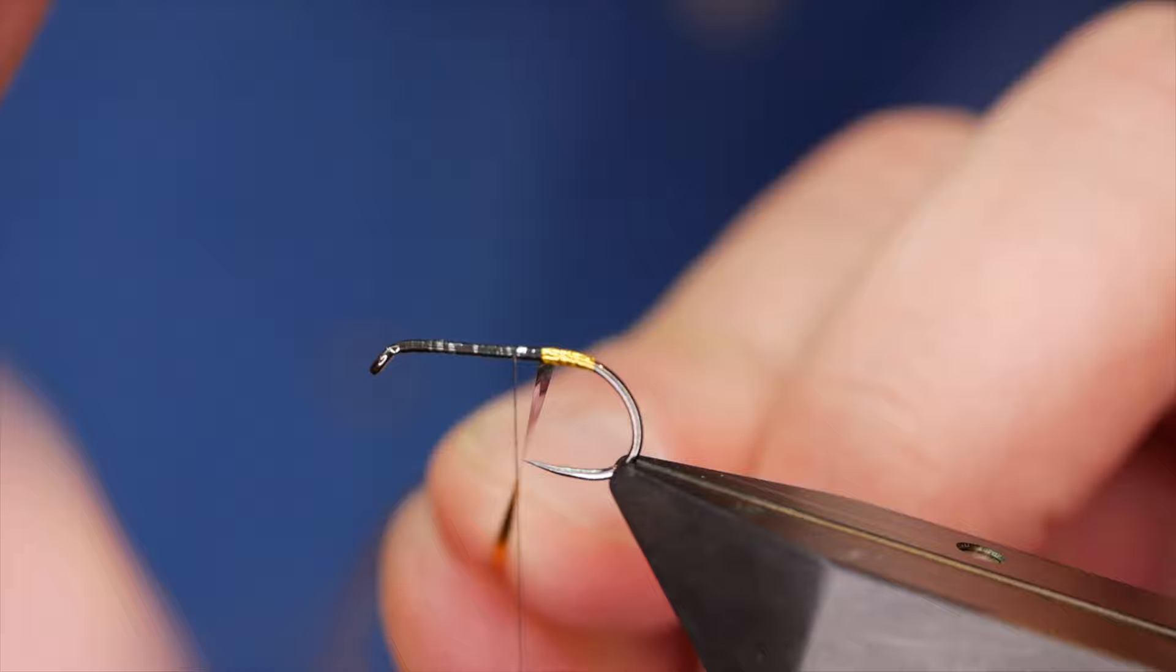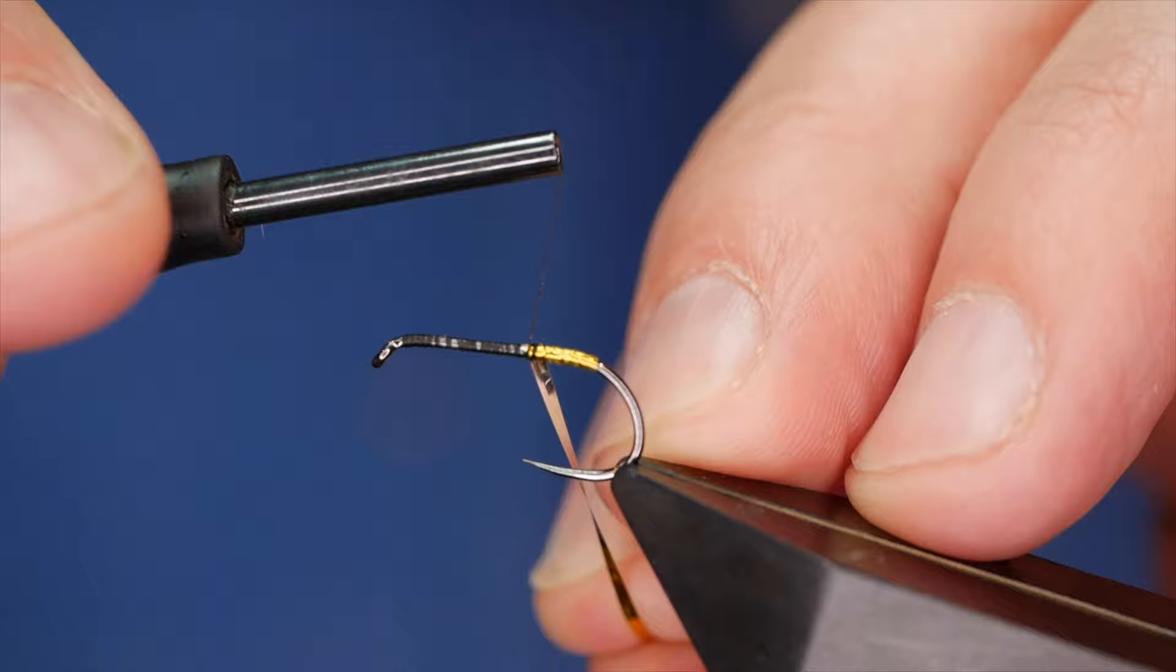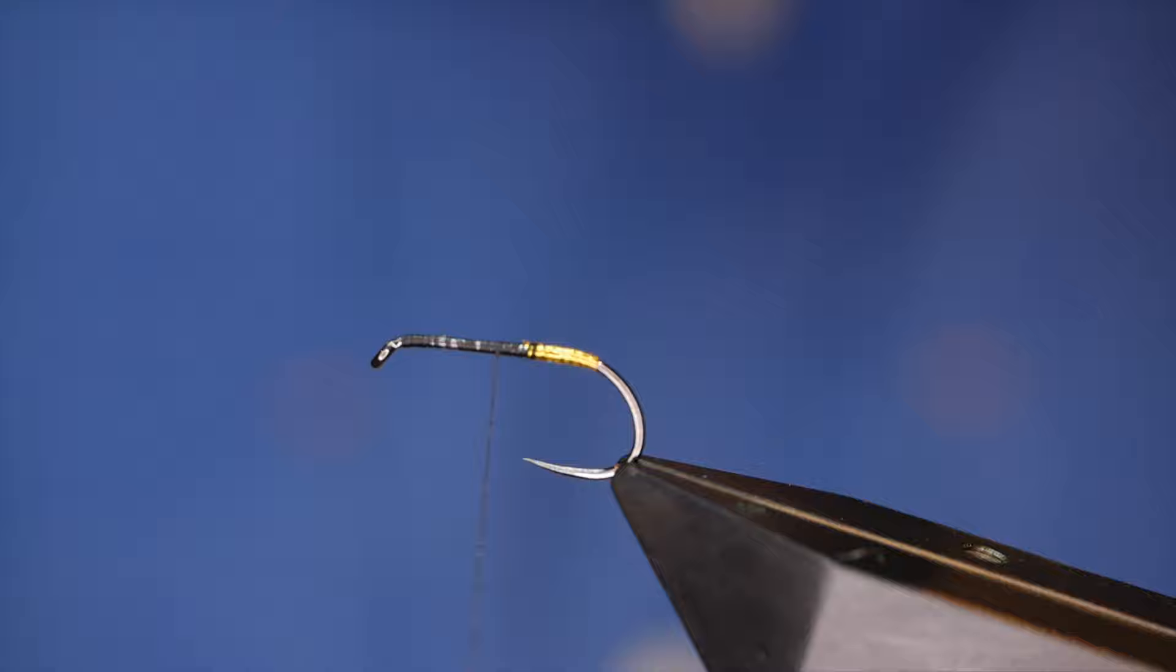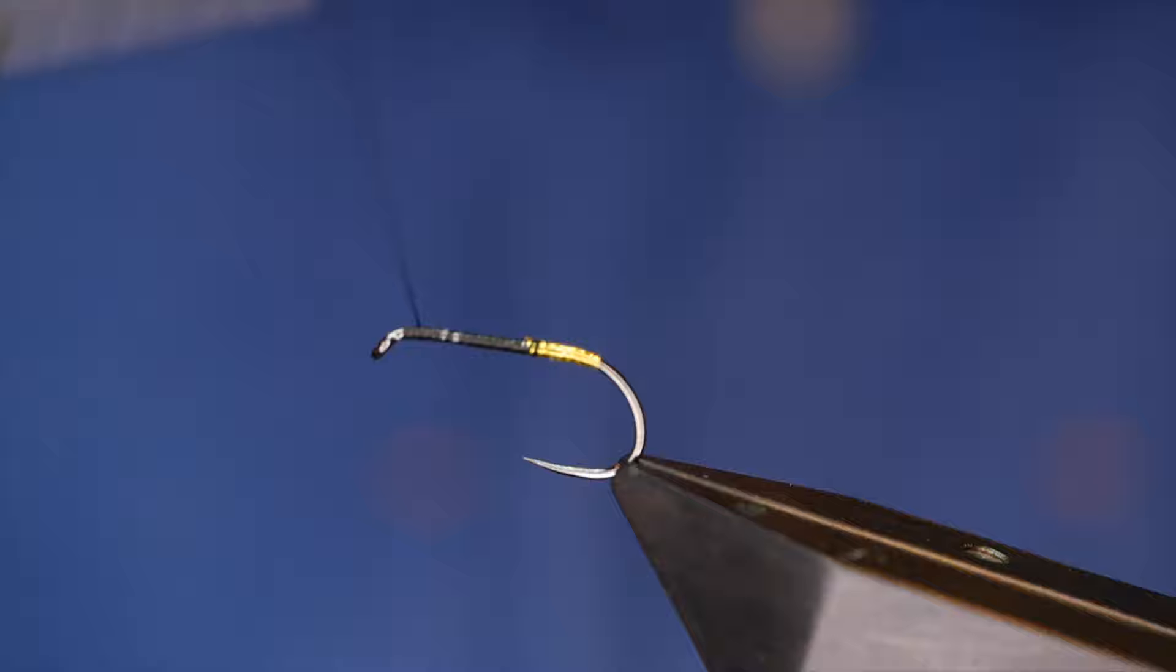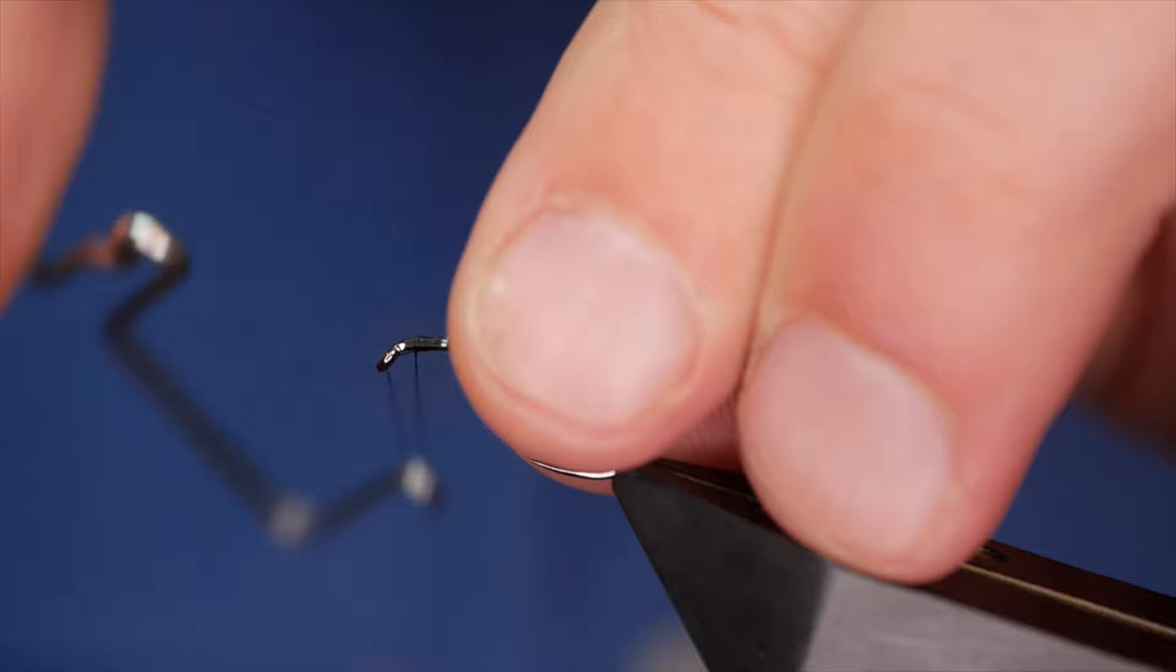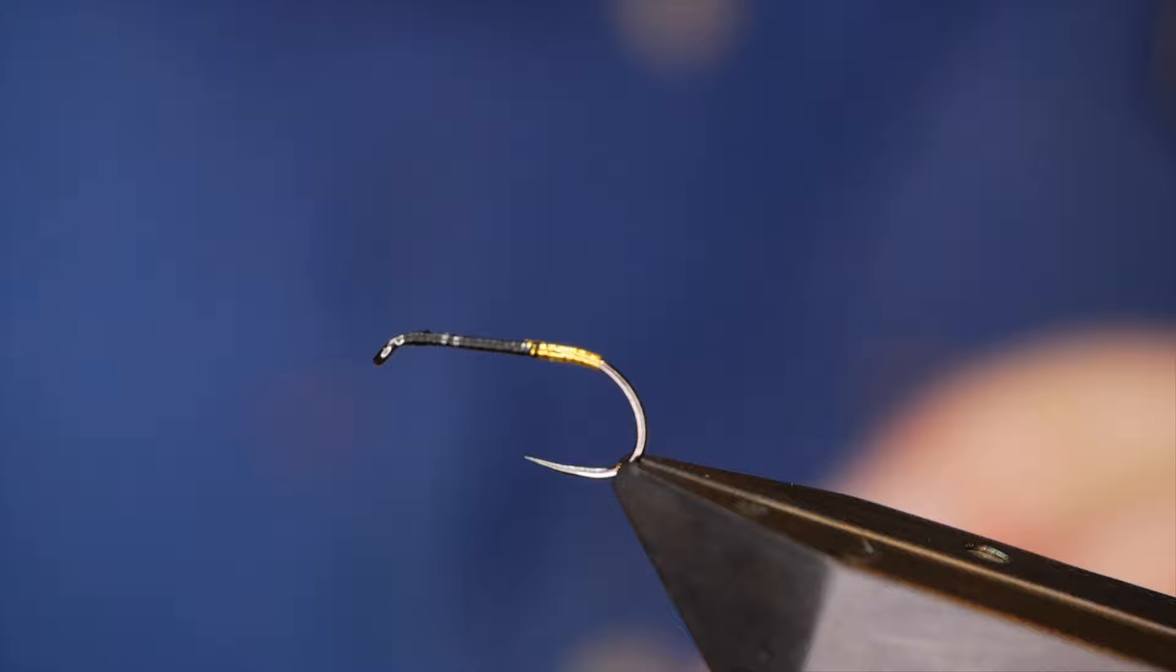I'm going to take away my excess material and bring my nano silk all the way up to the thorax area of a normal fly. I'm going to cast my thread off at this point. Once I've taken that away, I'm going to bring in some Glow Bright Floss number three, it's red.